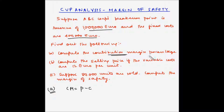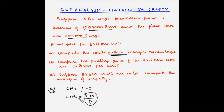The contribution margin percentage is the contribution margin divided by the selling price. Contribution margin divided by unit selling price gives the contribution margin ratio, and multiplying by 100 gives the contribution margin percentage. In our case, we do not know the contribution margin, the unit selling price, or the unit variable cost. However, we know the breakeven point in terms of revenue is 1 million euro and the fixed cost is 400,000 euro.